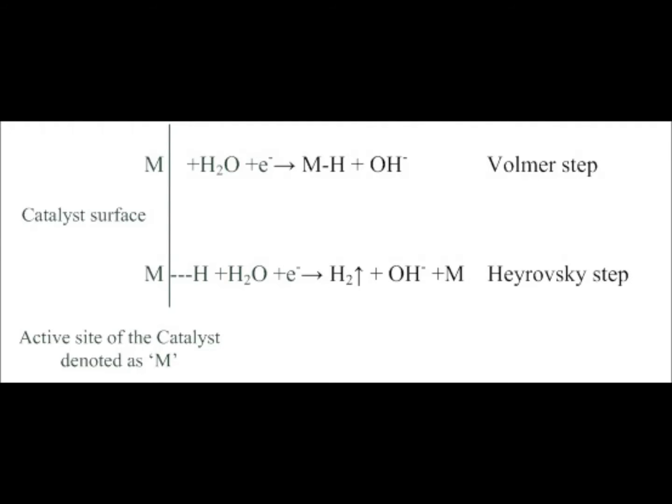The third step not being included is called Tafel. The catalyst surface or cathode has active sites labeled as M. In the Volmer step, water splits and the active site absorbs a hydrogen atom and a hydroxide ion is released.